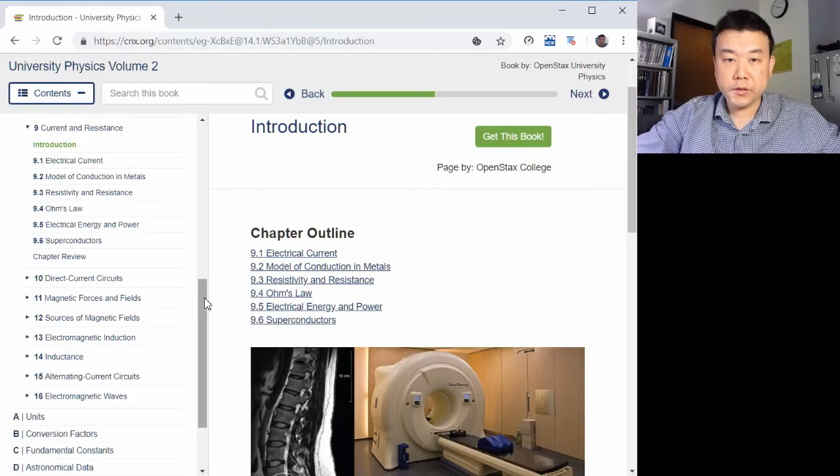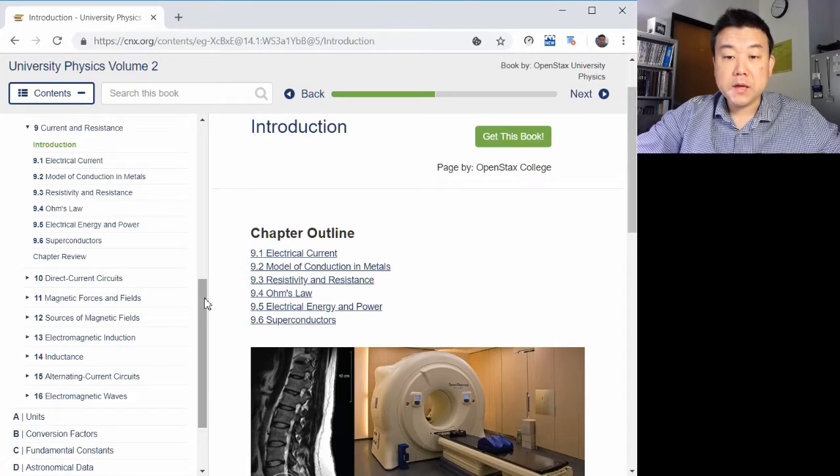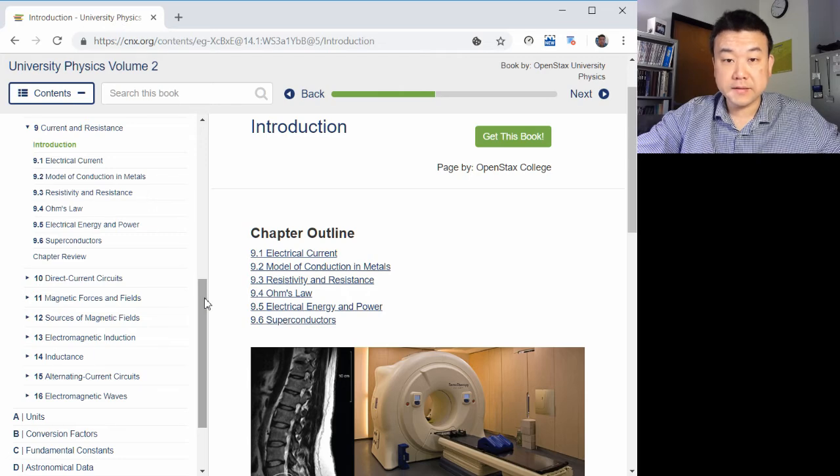Hi, this is overview video on Chapter 9. Chapter 9, Current and Resistance, is the first of the two chapters on DC circuit.